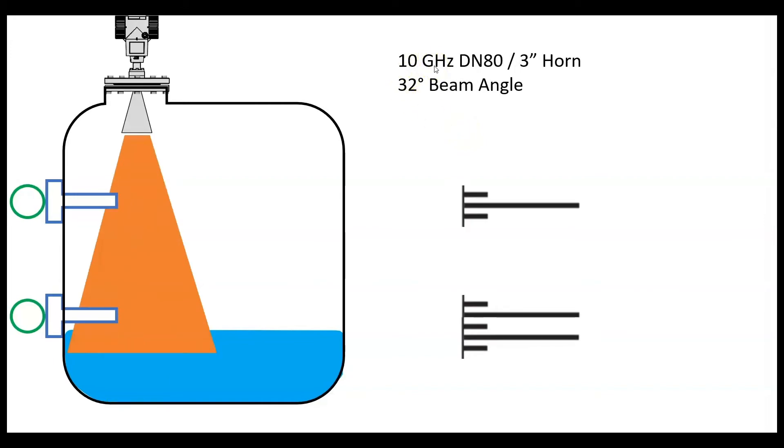A typical 10 gigahertz radar with a 3-inch horn would have a 32-degree beam angle. Why that's important is you get a nice wide coverage, but it can also pick up what we would consider false echoes.